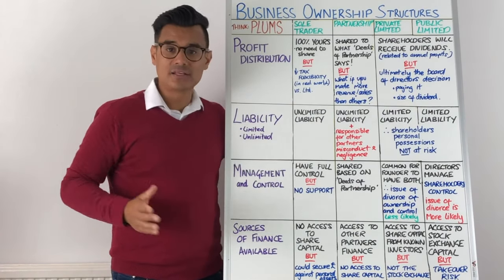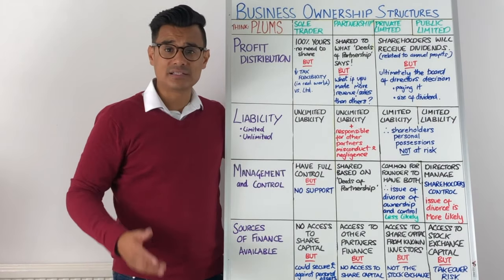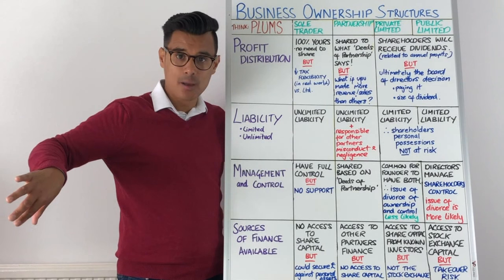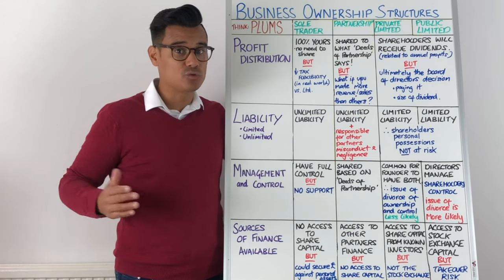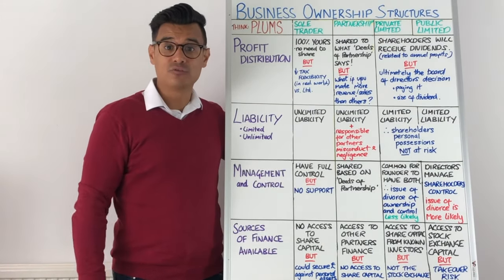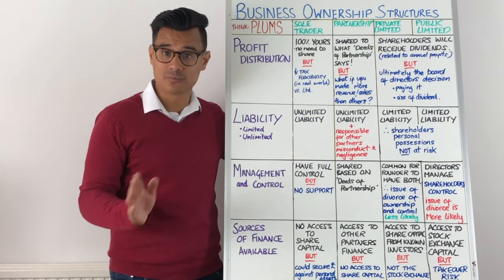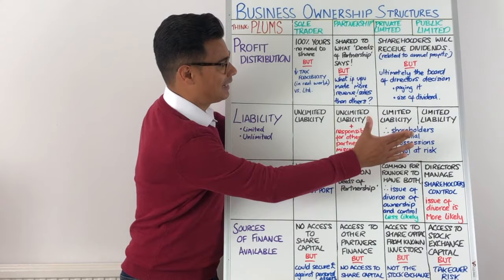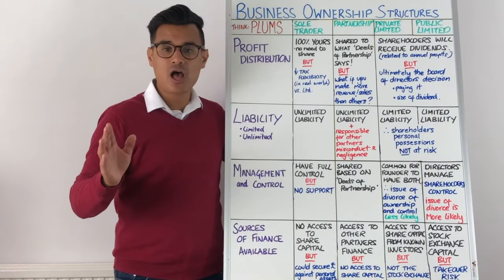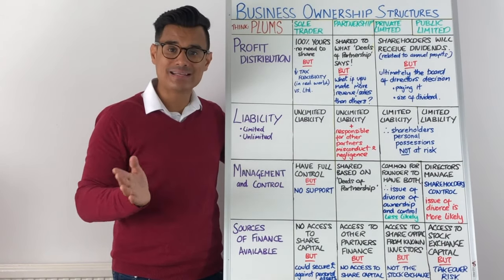Moving on to liability — whether it's limited or unlimited for each business ownership structure. For sole traders, clearly you're going to have unlimited liability, and for partnerships also you're going to have unlimited liability. However, in partnerships you are also responsible for other partners' negligence or misconduct, and in the worst case scenario you would be accountable with your personal assets, because you all face unlimited liability regardless of whose fault it was. Private and public limited companies — it's got limited in the name — so they have limited liability, meaning shareholders' personal possessions are not at risk. What is at risk is the investment shareholders have made into the company.